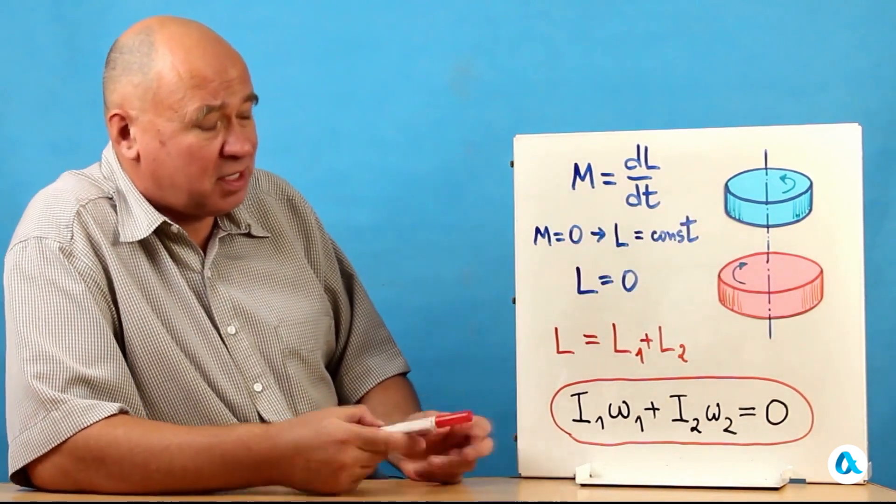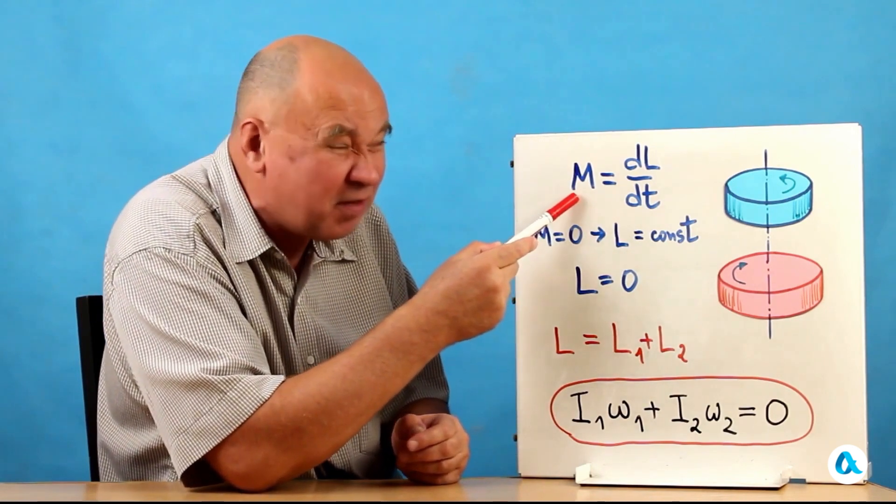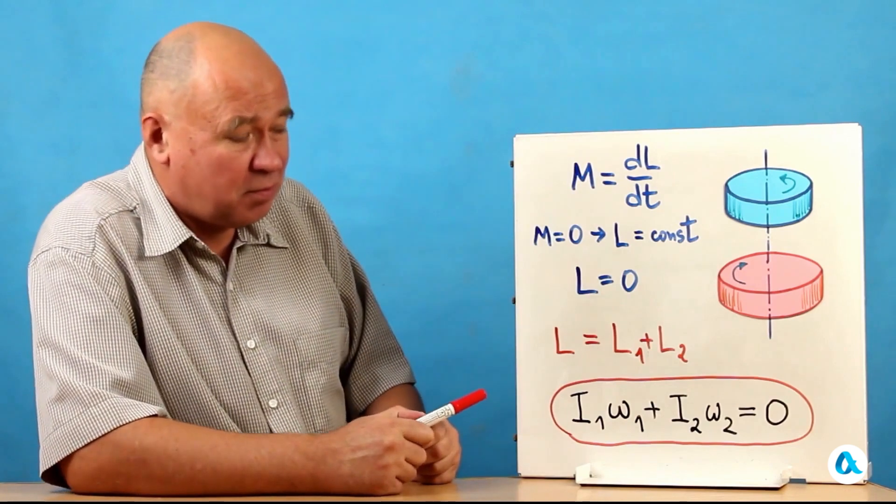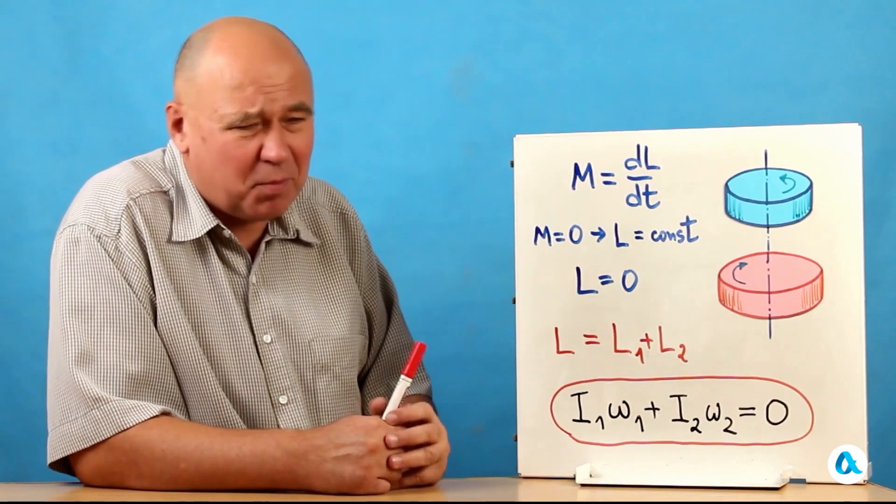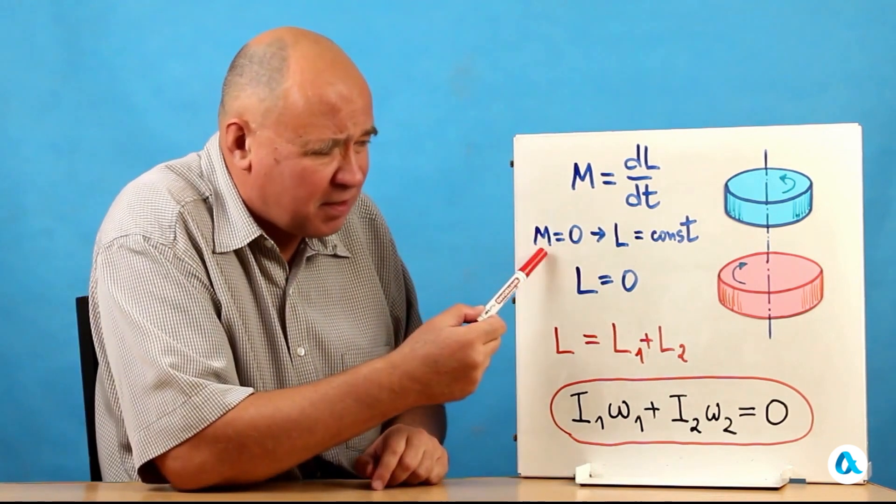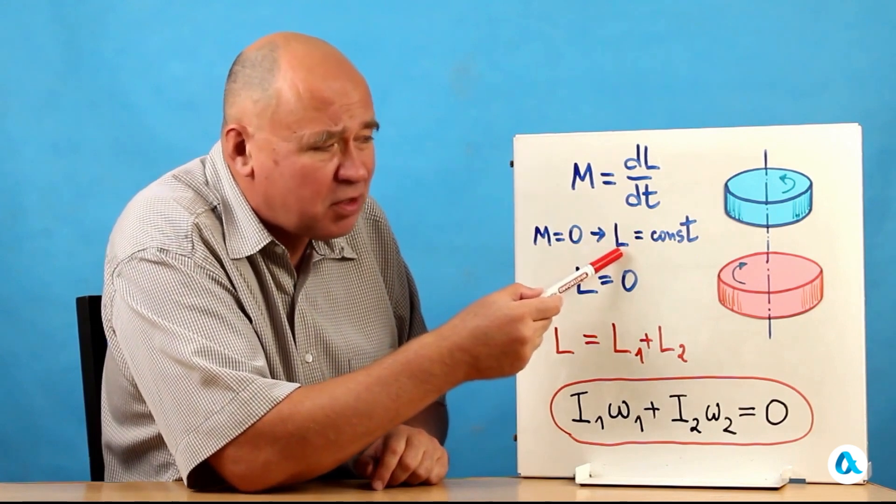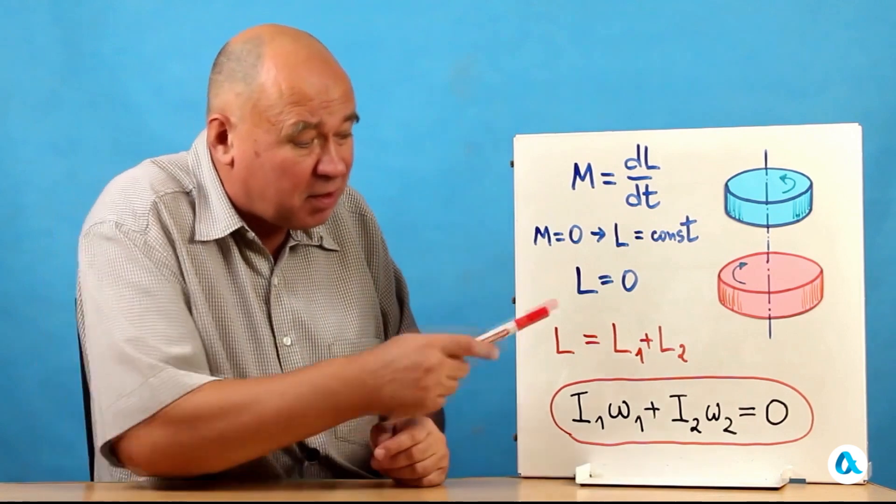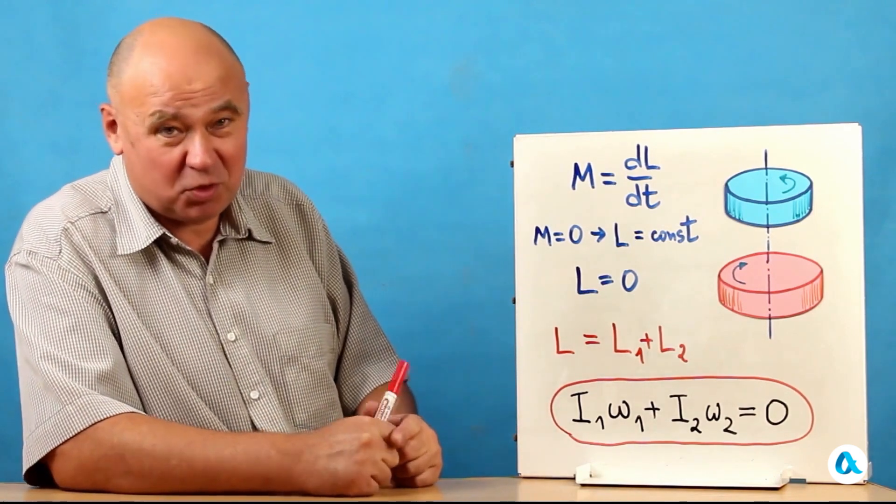So, what we need to note here is that we have the main equation. The moment of external forces is equal to the rate of change of angular momentum. However, the moment of external forces in our situation is practically equal to zero, if we neglect the friction forces at the axis. Well, then if this moment is equal to zero, the angular momentum does not change over time. It remains constant. At the start, nothing was rotating. It was equal to zero. And that means it will remain equal to zero.